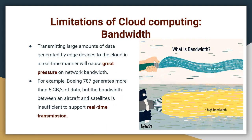The second limiting factor of cloud computing is bandwidth. Transmitting large amounts of data generated by edge devices to the cloud in a real-time manner will cause great pressure on the network bandwidth. For instance, a Boeing 787 generates more than 5 GB of data per second, but the bandwidth between an aircraft and a satellite is insufficient to support real-time transmission.